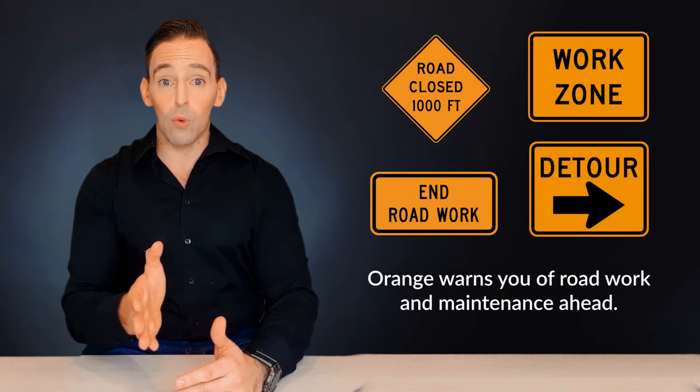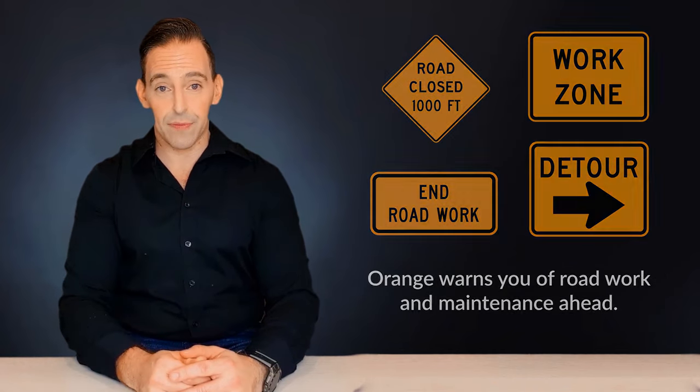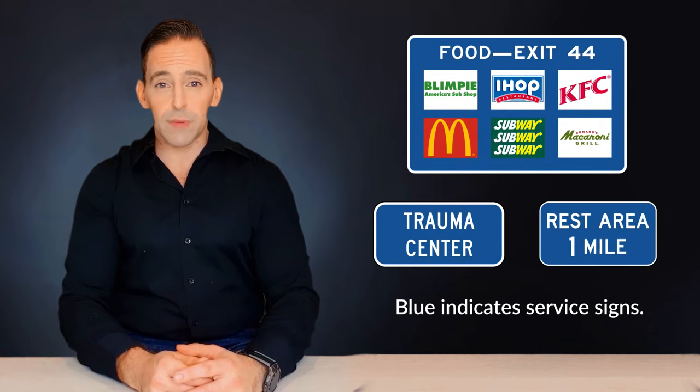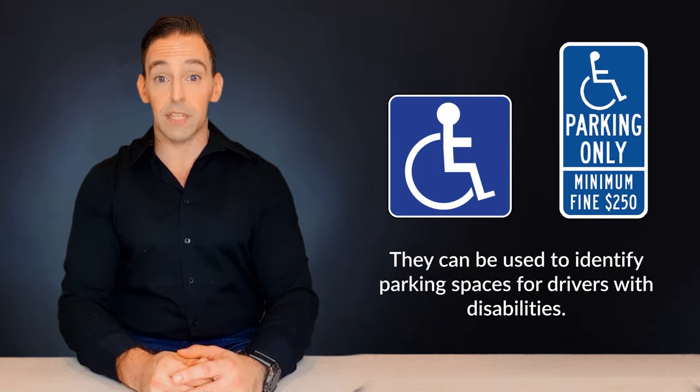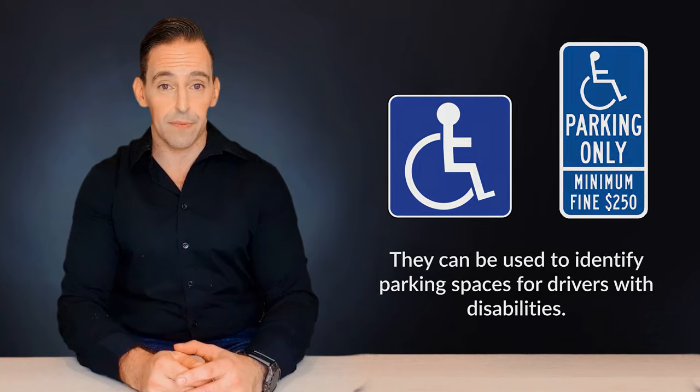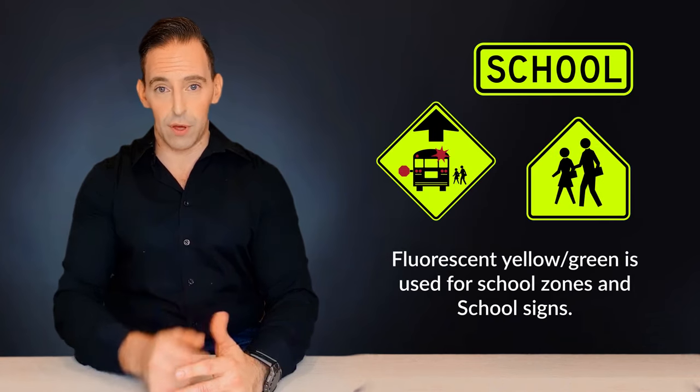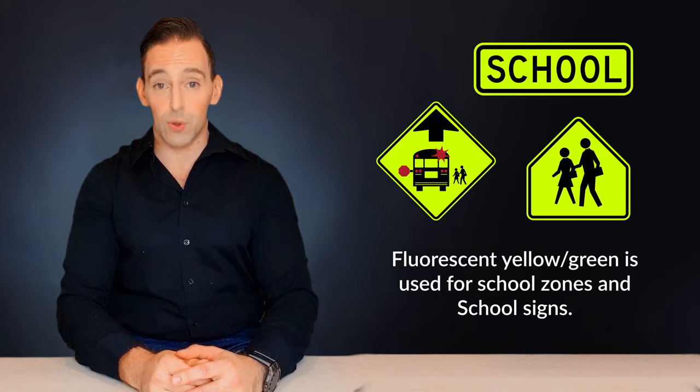Orange warns you of road work and maintenance ahead. Blue indicates service signs, but can also be used to identify parking spaces for drivers with disabilities. Fluorescent yellow and green is exclusively used for school zones and school signs.